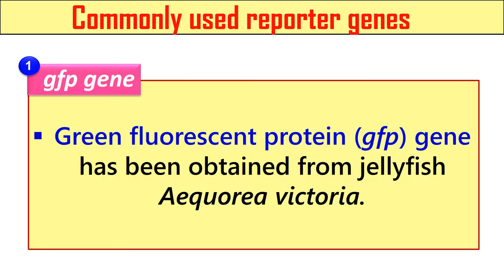Now let us discuss some examples of these commonly used reporter genes. First is the GFP gene. This gene encodes the enzyme green fluorescence protein. This gene has been obtained from the jellyfish Aequorea victoria, and this gene emits green fluorescence light in the blue to ultraviolet range. The formation of green fluorescence is ultimately detected by using the fluorescence microscope, and the position of this gene can be clearly identified by visualizing the green fluorescence light.